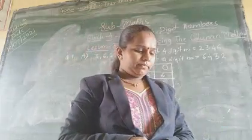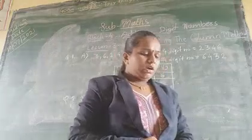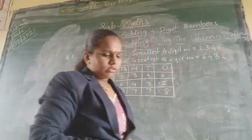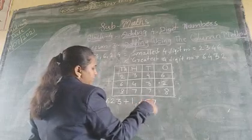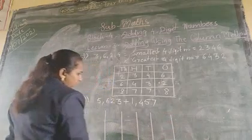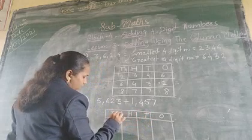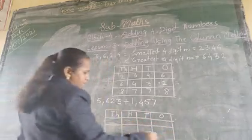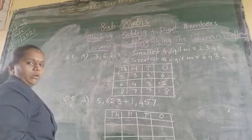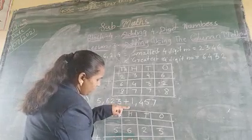Understand? Similarly, we solve question B. Then question 2A: add the numbers using the column method. The problem is 5623 plus 1457. First, we write up the ones, tens, hundreds, and thousands columns. For regrouping, one column is left empty, then two columns for writing the digits, and the last column for the sum.